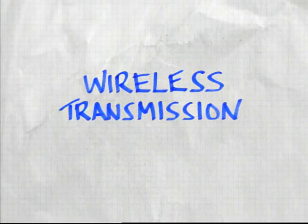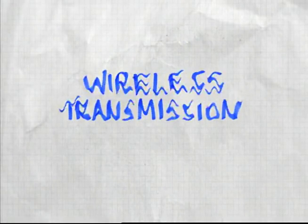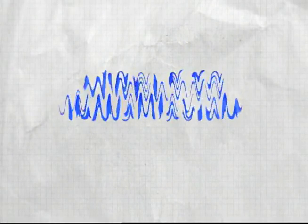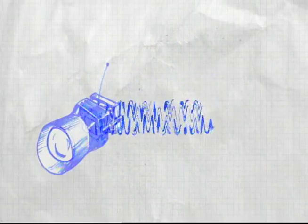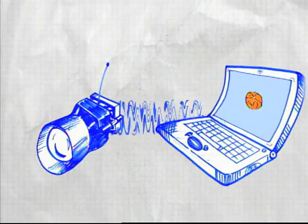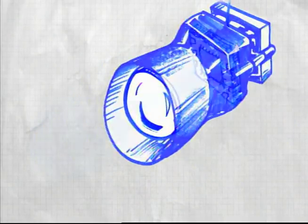Wireless transmission is one way to get video images from a camera to a screen. Here's how it works.